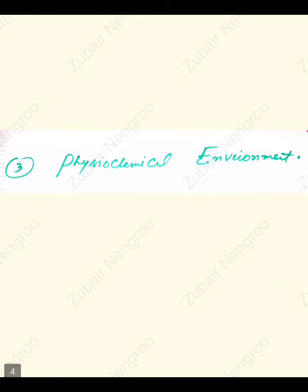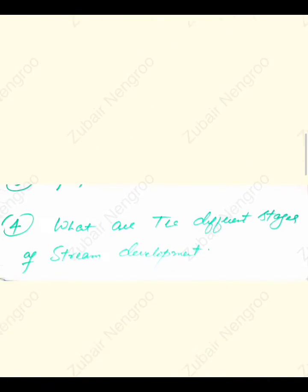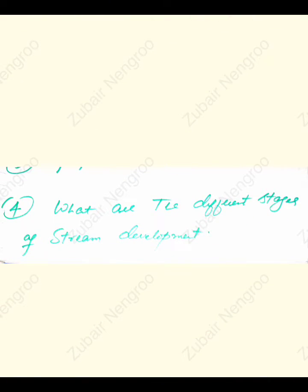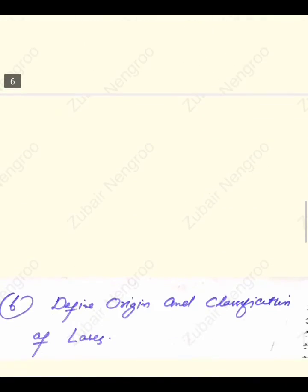Question number four: what are the different stages of succession development? Question number five: define nitrogen, phosphorus, and sulfur cycles — these are actually nutrient cycles and are an important objective of the exam. Question number six: define origin and classification of lakes.